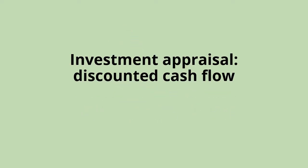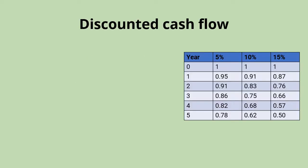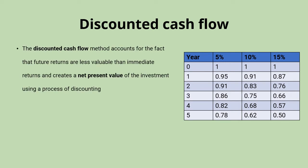This video explains how to use discounted cash flow as a method of investment appraisal. The discounted cash flow method accounts for the fact that potential returns diminish in value to a business as you move further into the future. So a million pounds in hand now is worth significantly more than the expectation of a million pound return in, say, five years time.